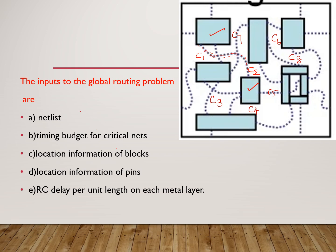What are all the inputs we have to give to the global router? The first one is the netlist. Netlist is nothing but the gates and their interconnections. From the netlist we get the information about which blocks we need to connect. The second input is the timing budget for critical nets — the critical nets decide the maximum speed of the circuit, so we must specify the maximum time budget for that critical path.